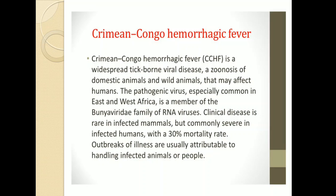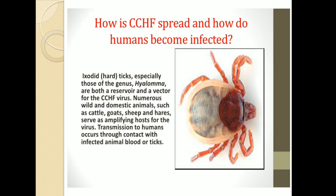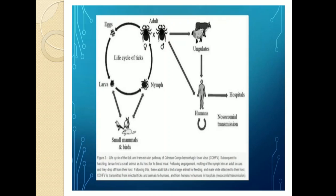CCHFV is a widespread tick-borne viral disease. It is a zoonosis of domestic and wild animals that may affect humans. Outbreaks are usually attributed to handling affected animals or people. Numerous wild and domestic animals such as cattle, goats, sheep, and hares serve as amplifying hosts for the virus. Transmission to humans occurs through contact with infected animal blood or ticks.